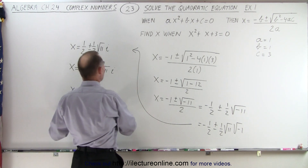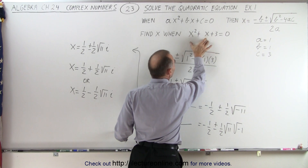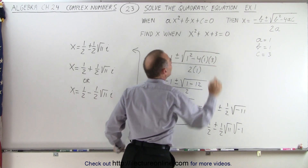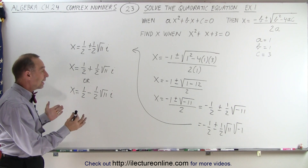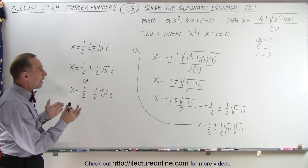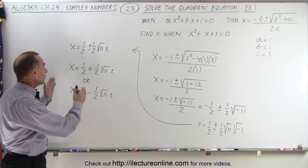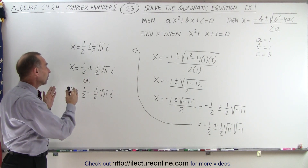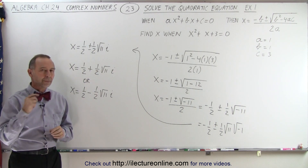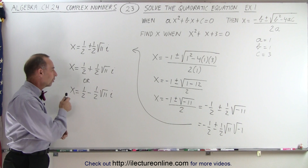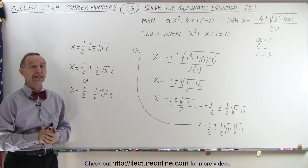If we plug in these two values into our equation, you will see that the left side will indeed equal 0 — you can try that. This is why we need complex numbers: because sometimes real numbers are not a solution to an equation, and only complex numbers are the solution to an equation like this. That's why we need them.